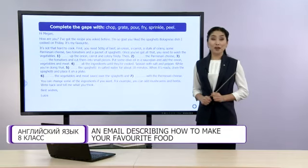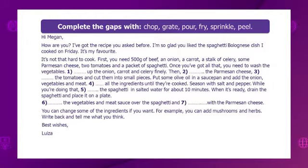Listen and compare your answers. Hi Megan, how are you? I've got the recipe you asked for. I'm so glad you liked the spaghetti bolognese dish I cooked on Friday. It's my favourite. It's not that hard to cook. First, you need 500 grams of beef, an onion, a carrot, a stalk of celery, some parmesan cheese, two tomatoes, and a packet of spaghetti. Once you've got all that, you need to wash the vegetables. Chop up the onion, carrot, and celery finely. Then, grate the parmesan cheese, peel the tomatoes, and cut them into small pieces.